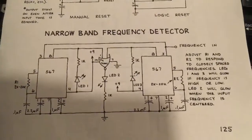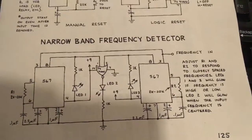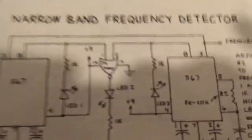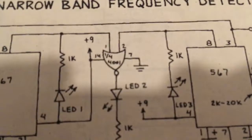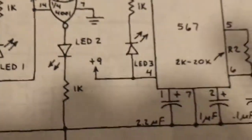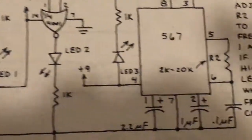You need two 567 ICs to do this project. Also, you need a single NAND gate for AA1 here. 2 LEDs, 3 LEDs.